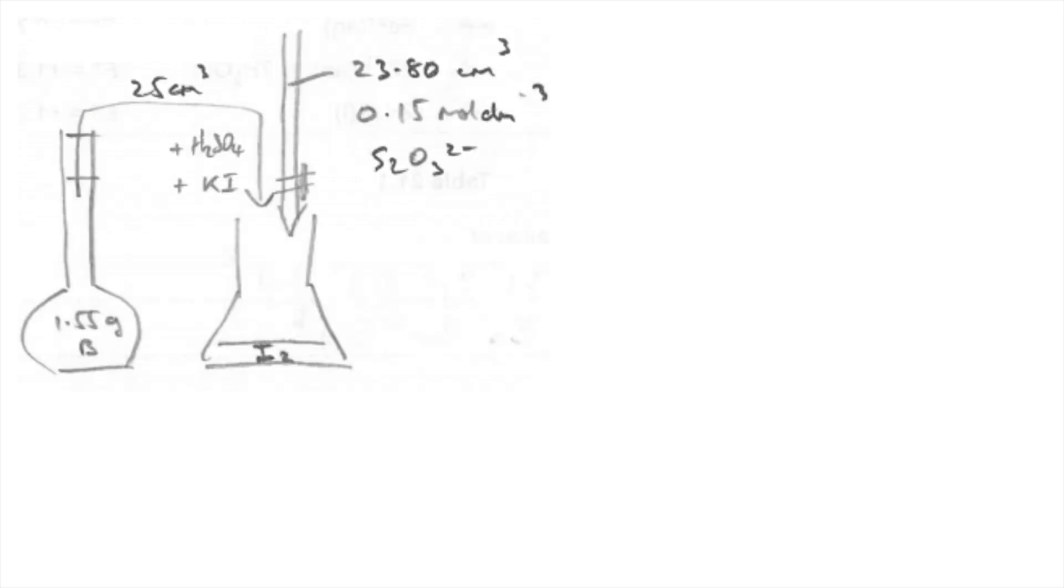So now the calculation, I always draw a little sketch of what's going on. So for the first part, they've dissolved 1.55 grams of this group 1 iodate 5 salt B into this 250 ml volumetric flask. They've taken out 25 cm³, they've added some sulphuric acid and some KI, and that gave us reaction 1, which produces the iodine. And then the thiosulfate is going to react with that iodine in the titration, and there's the second equation there.